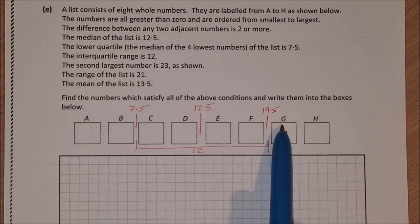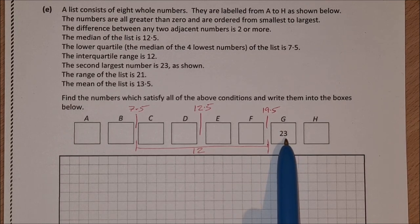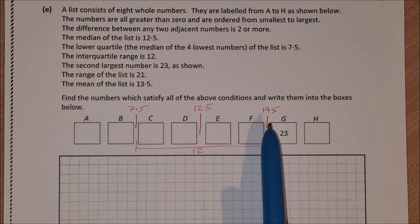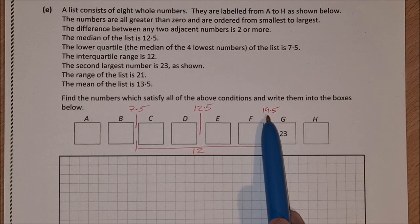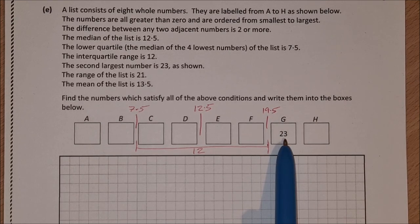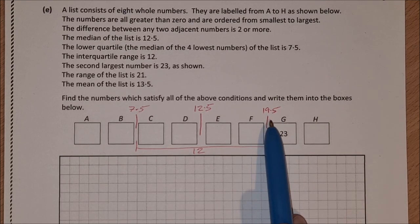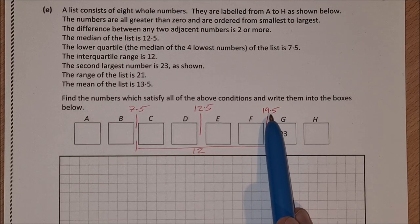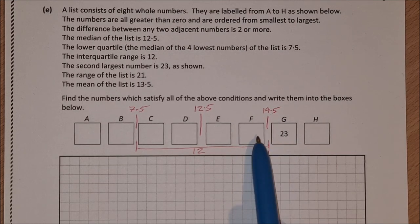Now, where I'll start is where we have the most information, which is here. So I have the upper quartile is 19.5, and I have this number here, 23. Now, the upper quartile, 19.5, is the average of these two numbers here.